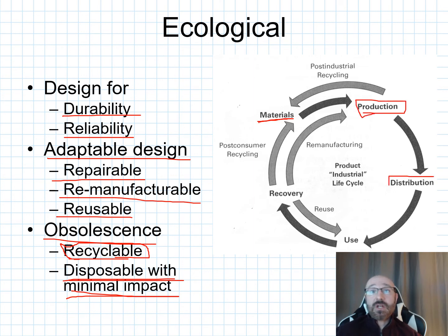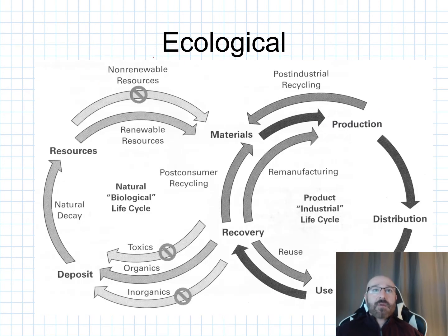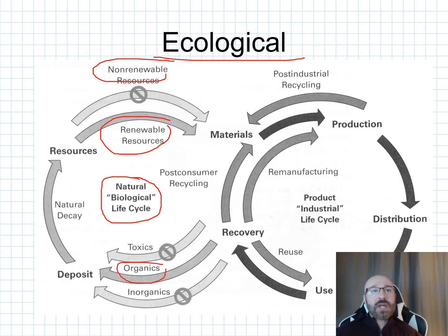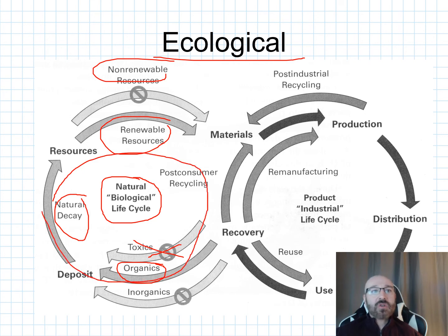Even distribution packaging becomes waste immediately when the user opens the product — can that packaging be recycled or is it biodegradable? When thinking about ecological impacts, consider the natural biological life cycle: choose renewable resources over non-renewable ones, and go with organic, non-toxic materials that have natural decay and go back to the earth. In any case where we can choose organic non-toxic materials, we should — so that there is a natural biological life cycle occurring based on the resources and materials we select. This ecological impact is a concern we really want to consider from the beginning of our design process.